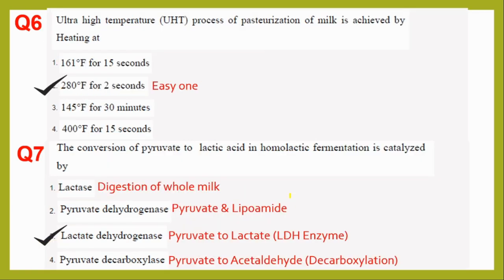Question six is about Ultra High Temperature treatment — again a sitter question. Even if one is not preparing for GATE, the UHT temperature is well known: 280 degrees Fahrenheit for 2 seconds. This becomes your UHT treatment temperature for milk.